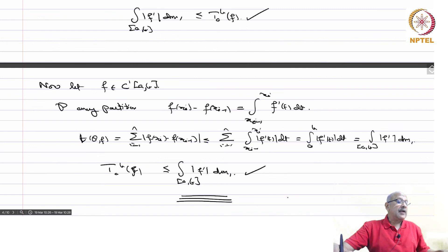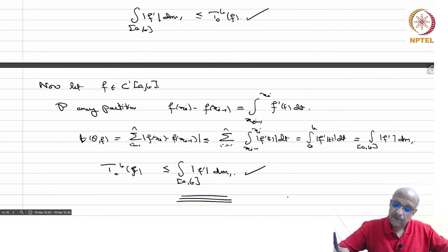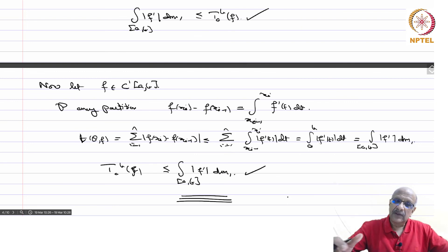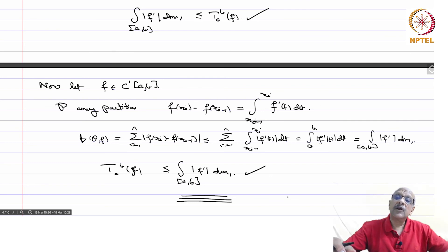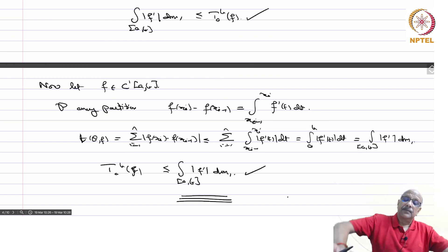Now we will look at vector-valued functions of bounded variation — that means f: [a,b] → Rⁿ. We can define functions of bounded variation in the same way and prove similar results, which leads to something quite interesting. We will take it up next time.